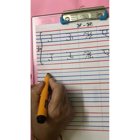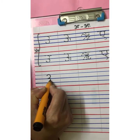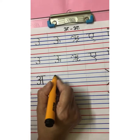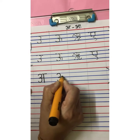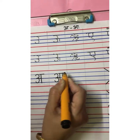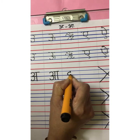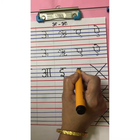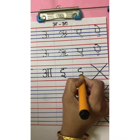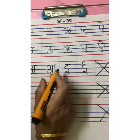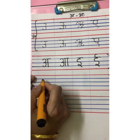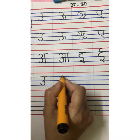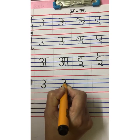First swar is A. Write A within the three blue lines. After A comes Aa, write Aa. After Aa comes E, write E. Then comes Badi E, write Badi E. Then come down — next comes U, write U. After U comes Bada U, write Bada U.